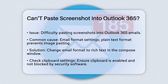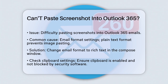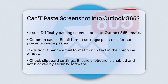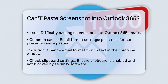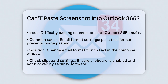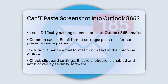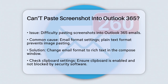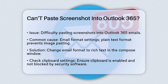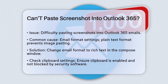Let's talk about the most common reason this happens. It often comes down to the email format settings in Outlook. If your email is set to plain text, you won't be able to paste images or screenshots directly into the email body. To fix this, you need to switch to rich text format.